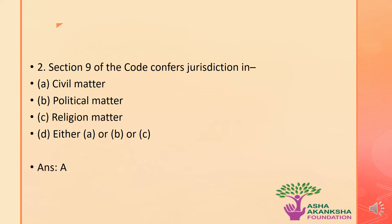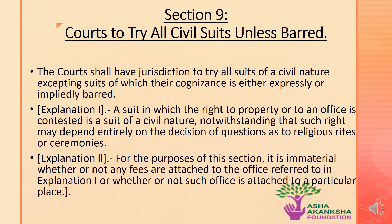Let's now understand what Section 9 states. Section 9 states the Code shall have the jurisdiction to try all suits of civil nature, excepting suits of which their cognizance is either expressly or impliedly barred. This means all courts shall have jurisdiction to try every suit of civil nature unless that jurisdiction is barred expressly or impliedly by any code or any expressly mentioned situation.